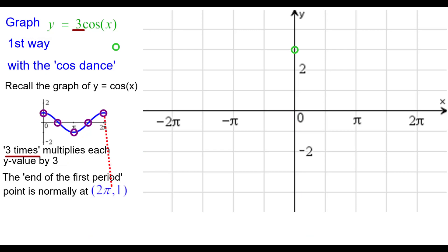The end of the first period is normally at 2 pi comma 1. That point is vertically stretched by a factor of 3 to be at 2 pi, 3. So we'll plot that one.